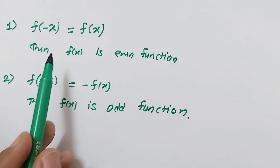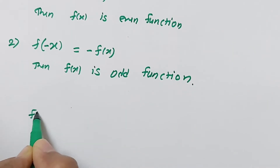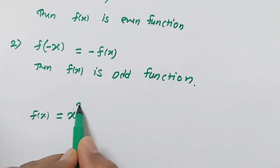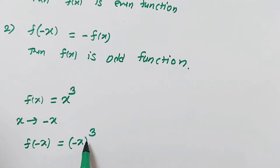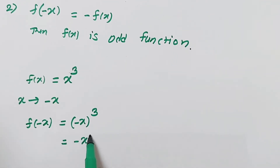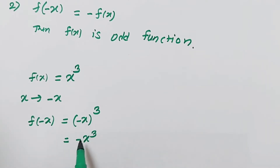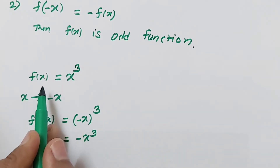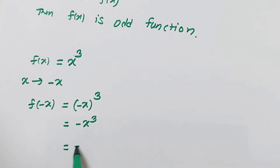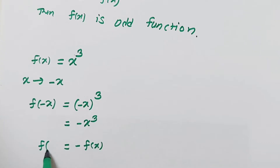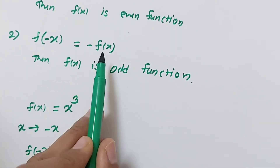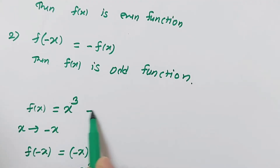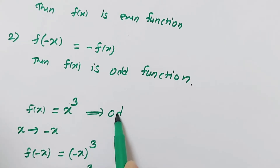Now we discuss some examples so that this definition will be clear. Suppose we are given the function f of x equals x cubed. If we replace x by minus x, then f of minus x equals minus x cubed, because minus raised to the power 3 is minus. So minus x cubed means it is minus of our actual function f of x equals x cubed. Therefore f of minus x equals minus f of x. This is the condition for an odd function, so f of x equals x cubed is an odd function.